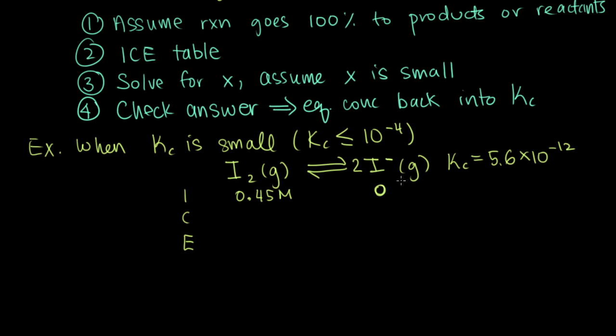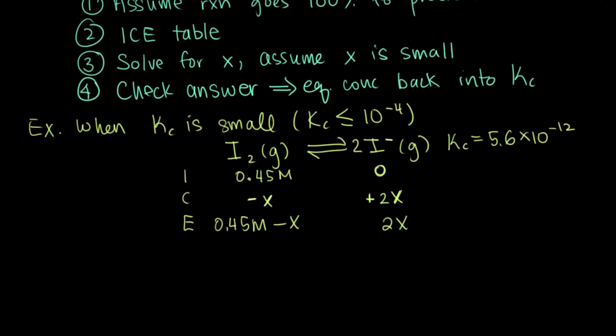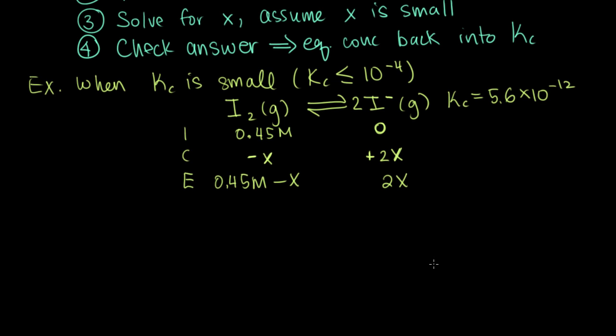We're going to assume reaction goes 100% to either products or reactants. Here we know that we have mostly reactants. If we start out with all reactant and no product, we assume that at equilibrium we're still going to have mostly reactant. It's going to change a little bit. Some of this is going to turn into I minus, so we'll say minus x for some small concentration of I2 that gets converted, and that minus x will turn into 2 moles of I minus. But we don't expect x to be very big, and that's the key to being able to use this approximation. If we add these up to get our equilibrium concentrations, we get 0.45 molar minus x for I2, and we get 2x for our I minus concentration.